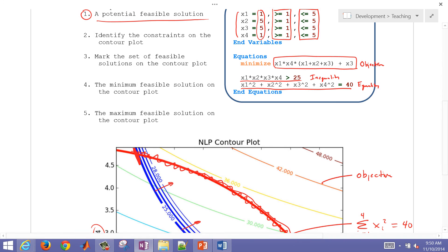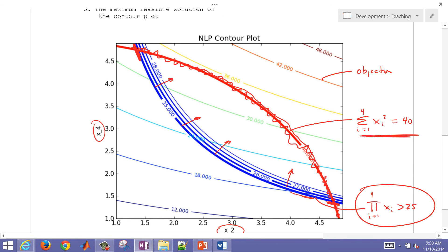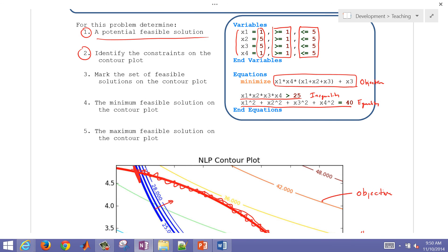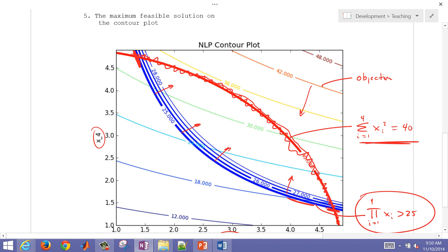We've already identified the constraints on the contour plot for number two. We identified that this was the sum of the squares and this one was the product. And then we marked the feasible solutions. Let's take a look at the minimum feasible solution. We can see that as we proceed this direction that our objective function gets less.